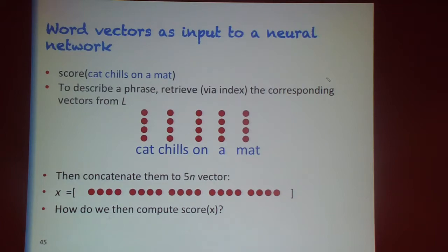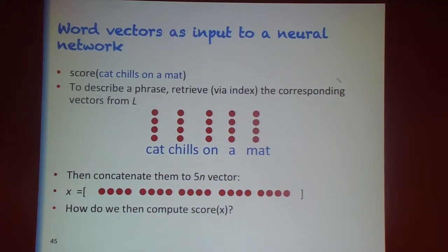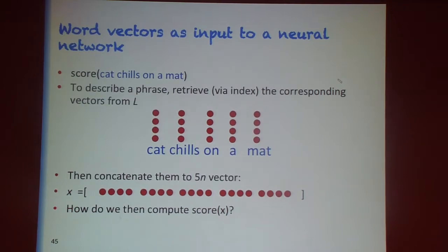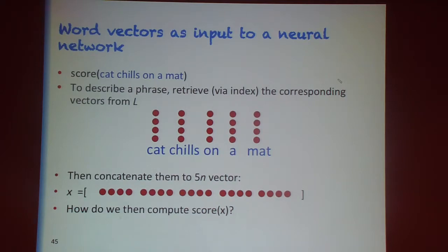If we have a representation for each word, how do we then learn a score for a phrase? If we have a sequence of words each with its representation, we concatenate the word representations to form a long vector as the representation for the phrase, and that's what we then score.